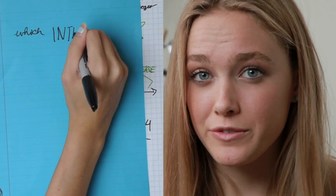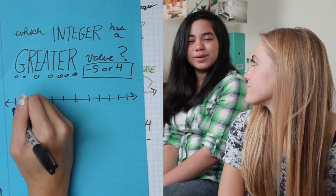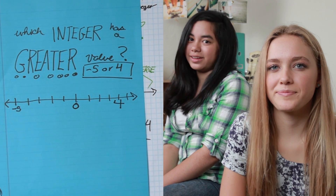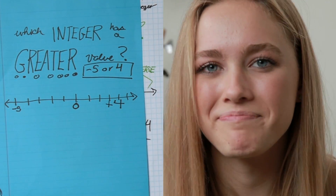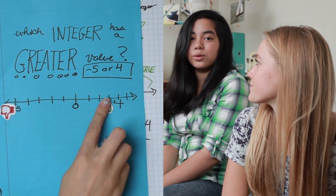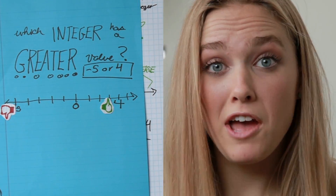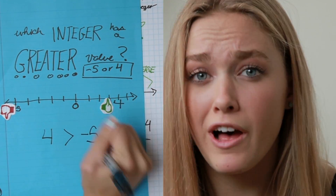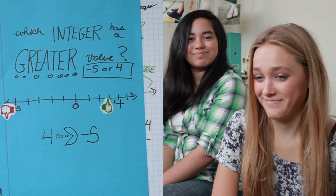Okay, now that we have talked about value, let's ask a question: which integer has a greater value — negative 5 or 4? First, we put negative 5 and 4 on a number line. We see that 4 is farther to the right than negative 5. Let's also place a positive sign in front of the 4 — that's a nice trick as well. Think about two YouTube videos: one has negative 5 votes and one has 4 positive votes. Which one would you choose? The answer is: positive 4 has a greater value than negative 5.